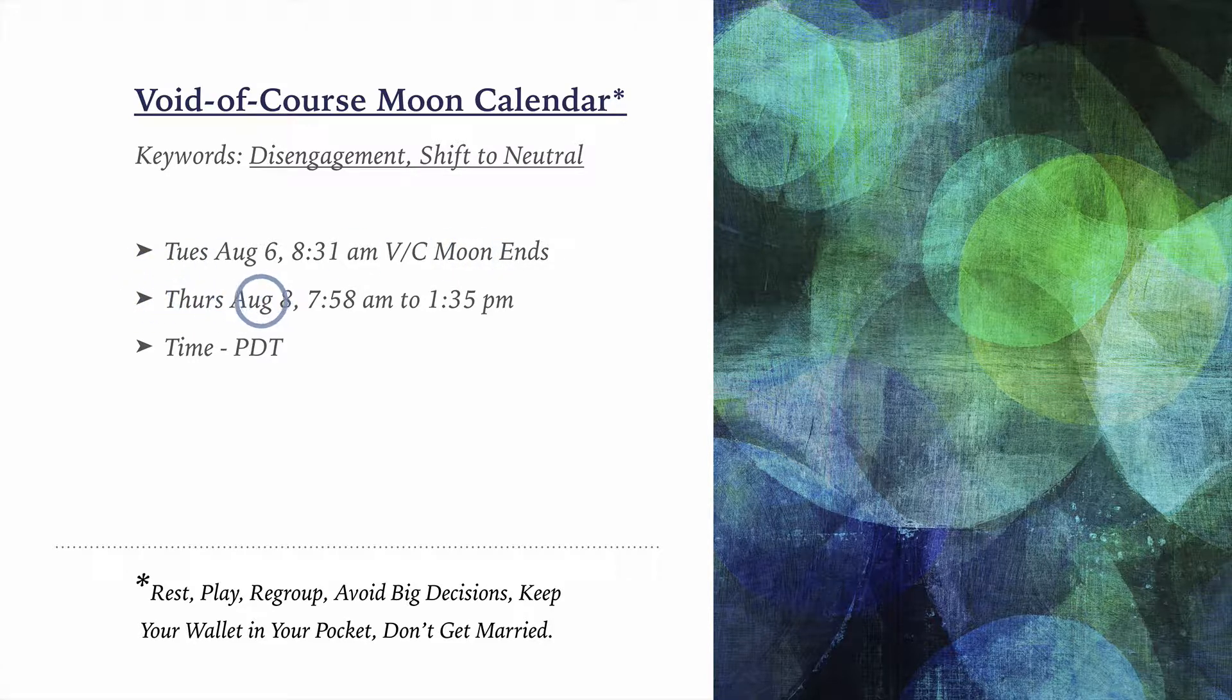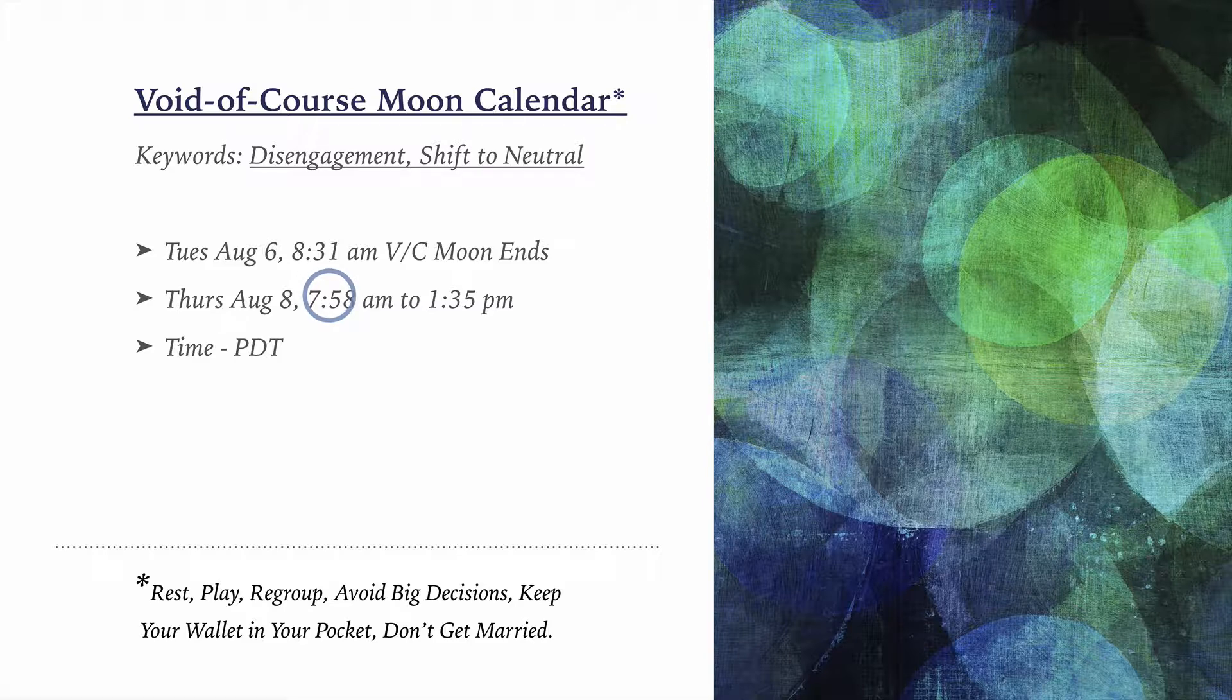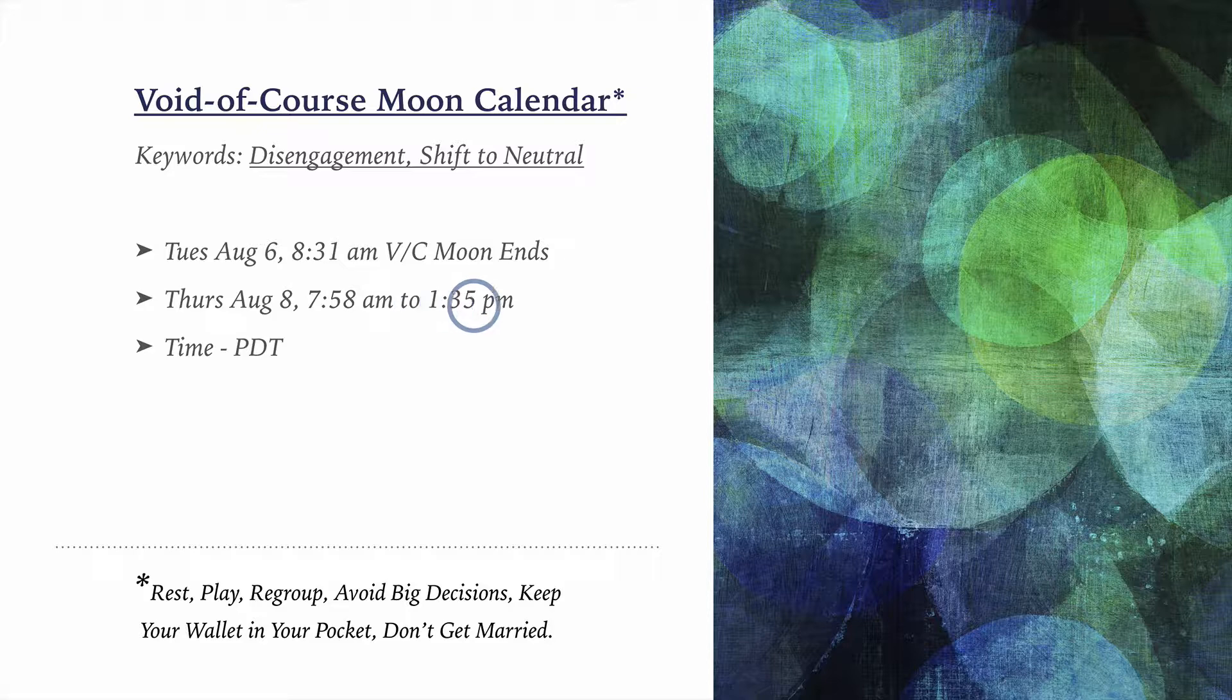Thursday, August 8th, the Moon goes void at 7:58 a.m. and it lasts to 1:35 p.m. So that's sort of average, not an outlandish period of time. But we are talking about five and a half hours or so where the Moon is void of course.